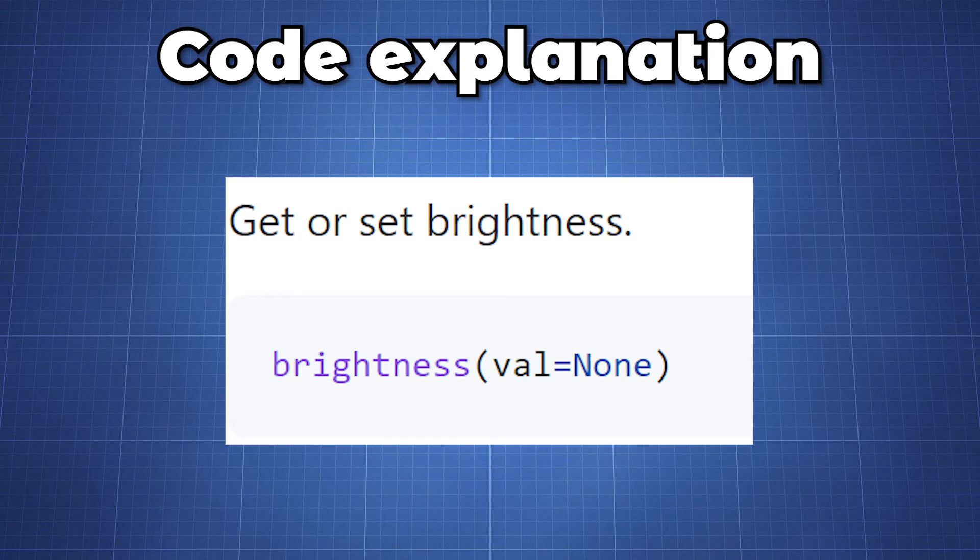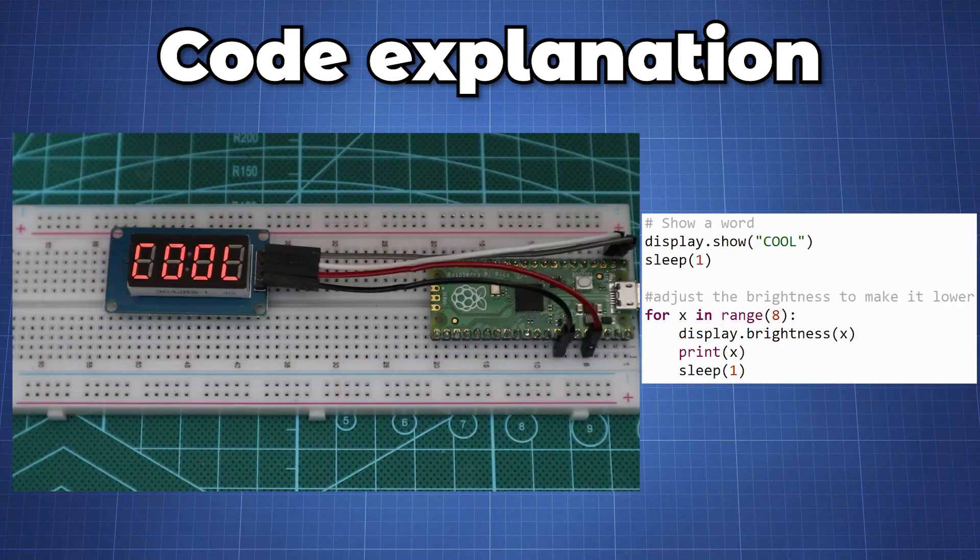And then finally we can control the display's brightness by setting a value of 1 to a maximum brightness of 7. Here we have a short loop showing each brightness with the word cool that will go from 1 to 7 with a delay of 1 second.